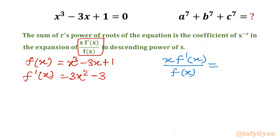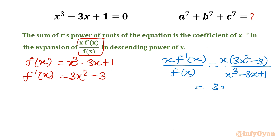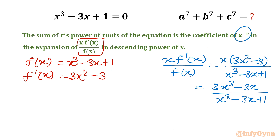So xf'(x)/f(x) is x times (3x² - 3) divided by (x³ - 3x + 1), which gives us (3x³ - 3x) divided by (x³ - 3x + 1). Now I will perform the long division of 3x³ - 3x by x³ - 3x + 1, which will give us terms with negative powers of x.